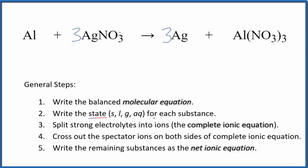Now we need to write the state for each substance. That looks like this. So aluminum, that's just a metal, so that'll be a solid, just like silver is a metal, that's a solid.